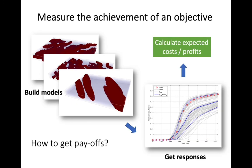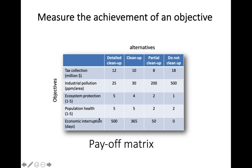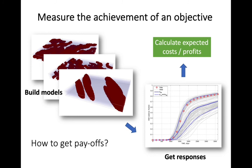There's a question of how to get these payoffs — how do you actually know it's going to be $12 million in taxes? Here is where you have to build models. This is part of the iterative process: you look at models, examine uncertainty and compare various model realizations, get responses from those models, and calculate expected costs and profits. This would be a whole modeling workflow done to get those payoffs. In some cases you may do a preliminary estimate, but to get quantitative numbers you'll need to do this modeling step.